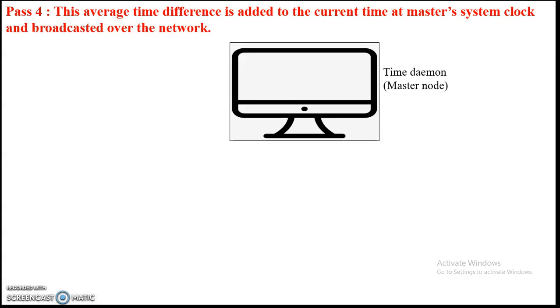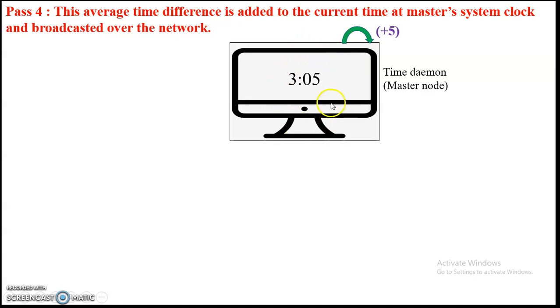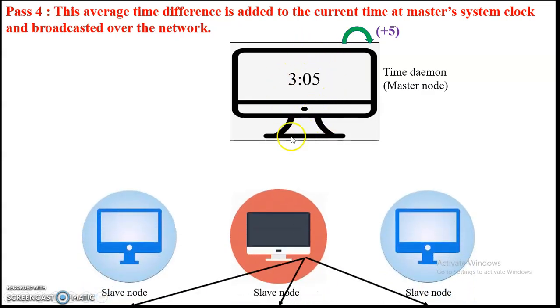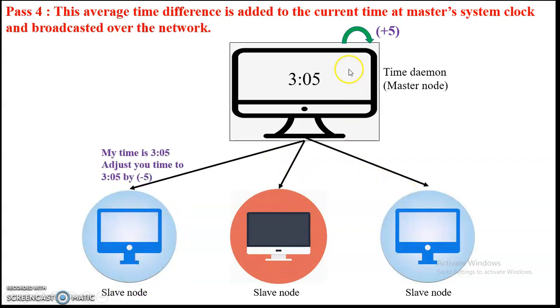In pass 4, the fault-tolerant average time of 5 minutes is added to the master's current clock time. The master was at 3:00, so adding 5 gives 3:05. This new time is broadcasted to all slaves in the network — the master says: my time is 3:05, adjust your time accordingly.